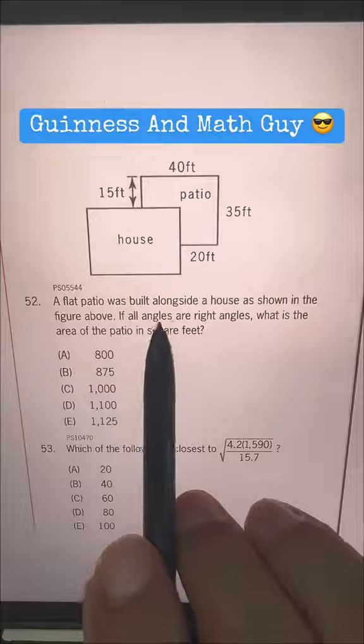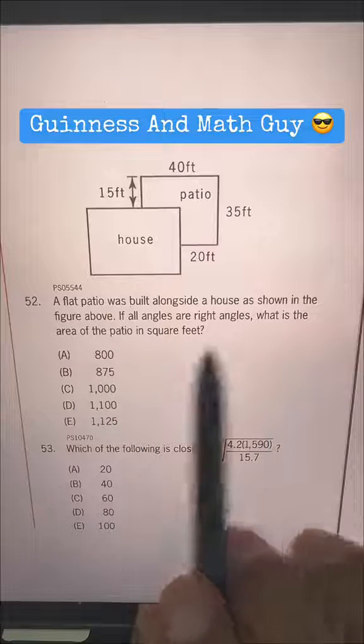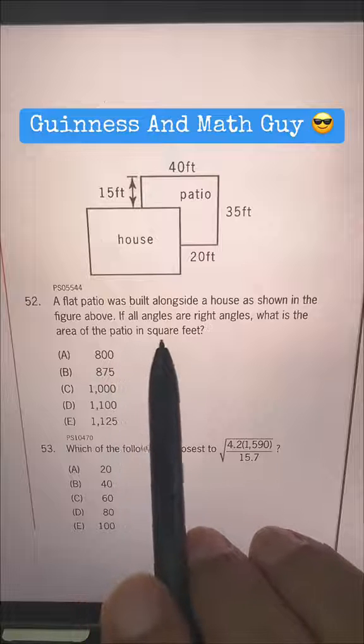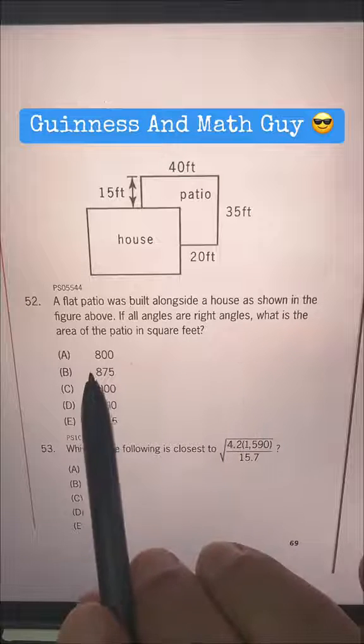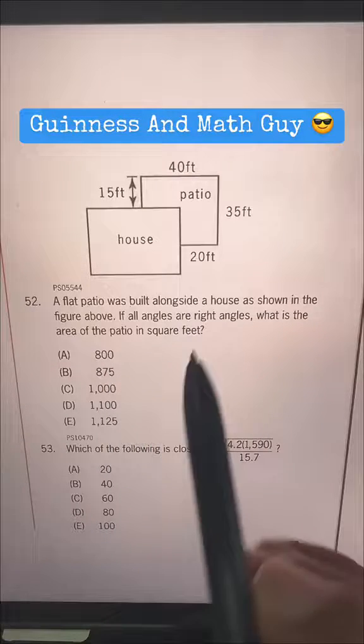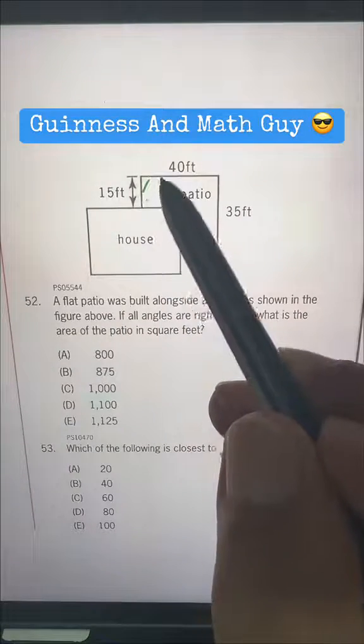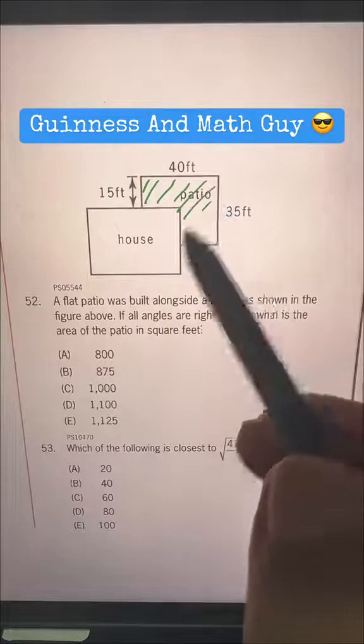A flat patio was built alongside a house as shown in the figure above. If all angles are right angles, what is the area of the patio in square feet? We have to find the area of this region, this patio.